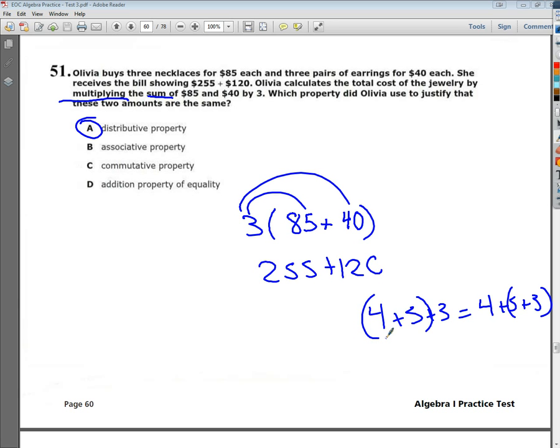Commutative just means I flip the order around. Well, she didn't necessarily flip the order around. She still has 85 and 40 in front. She just multiplied them by 3 as opposed to adding them all together.